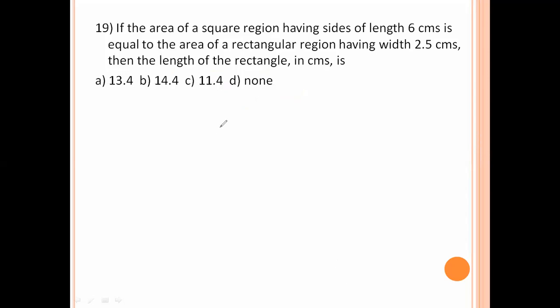If the area of the square region having side of length 6 centimeters is equal to the area of the rectangle region having width 2.5 centimeters, then the length of the rectangle in centimeters is. Area of the square is side into side equal to area of the rectangle is length into width. 6 into 6 equal to length into 2.5. 14.4 is the length of the rectangle.